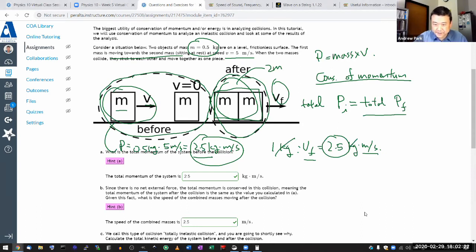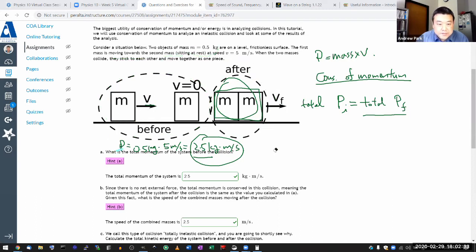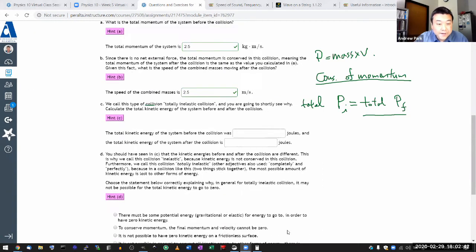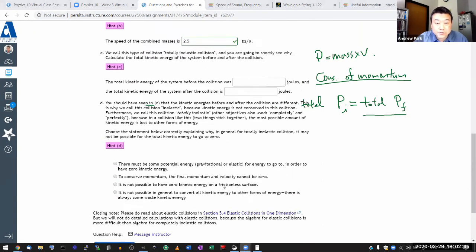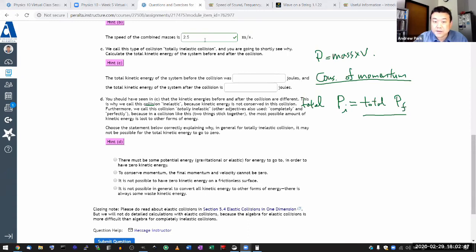All right. I don't think I want to clear entirely. Let me just erase some of these. So let me kind of wrap up the remainder of the question. I have, so this is once again, tutorial type question. It's kind of trying to walk you through this kind of consideration that I'll be teaching you to do a lot in physics 4a. Okay, it says, we call this type of collision totally inelastic collision. And you're going to shortly see why. Calculate the total kinetic energy of the system before and after the collision.